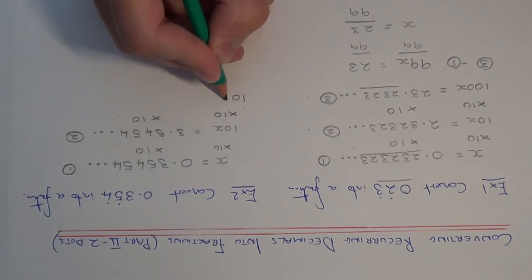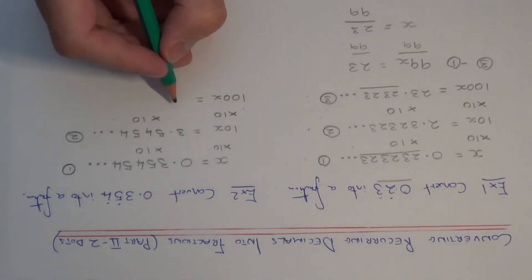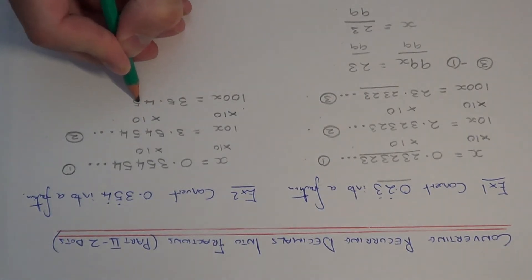So that will give me 100x. And if I multiply this by 10 I get 35.4545 etc.